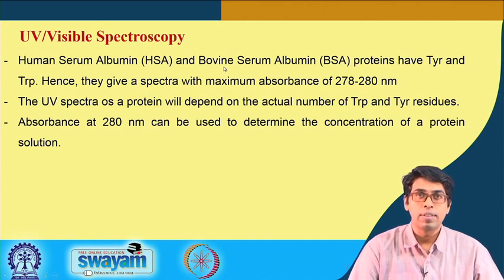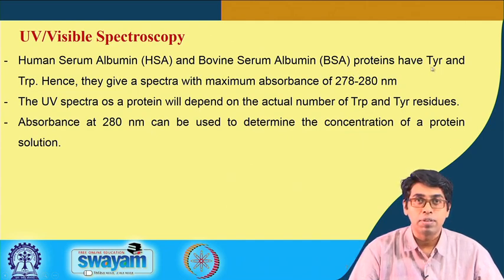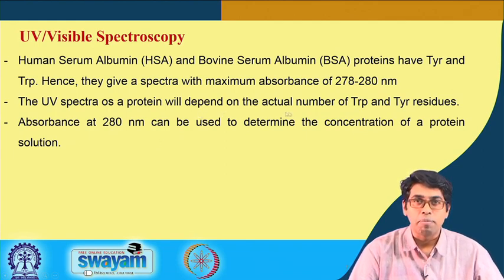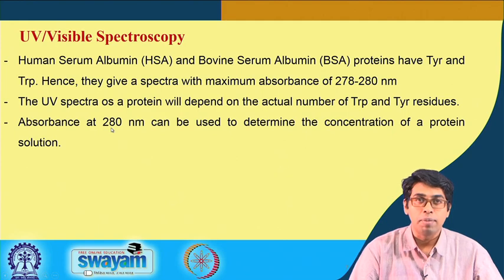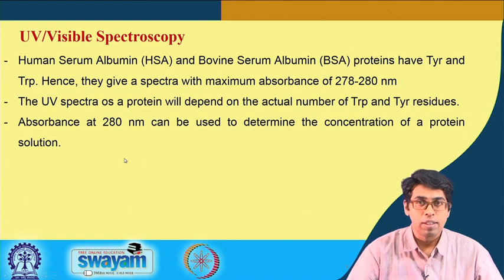We also tested HSA and BSA, which have both tyrosines and tryptophan. In this case the maximum absorbance of the spectra shifted more towards 280 nanometers — in the range of 278 to 280 nanometers. The actual spectrum depends on the number of tryptophan and tyrosine residues in the protein. Once you measure the absorbance of a protein you can use it to determine the protein's concentration, which we will cover in subsequent lectures.